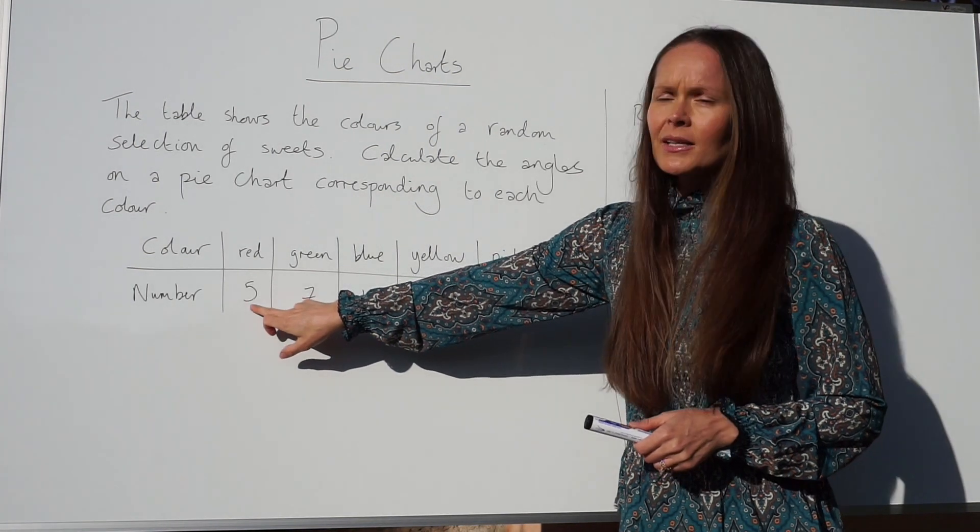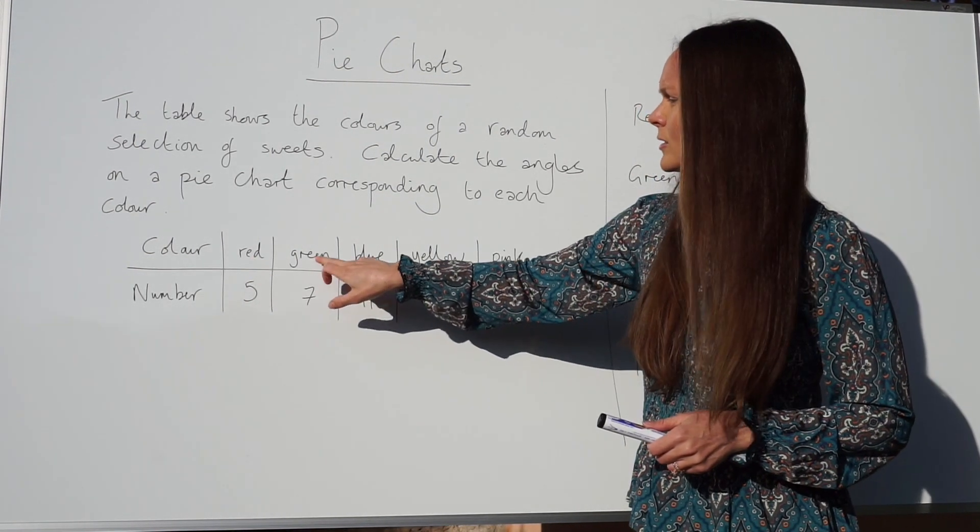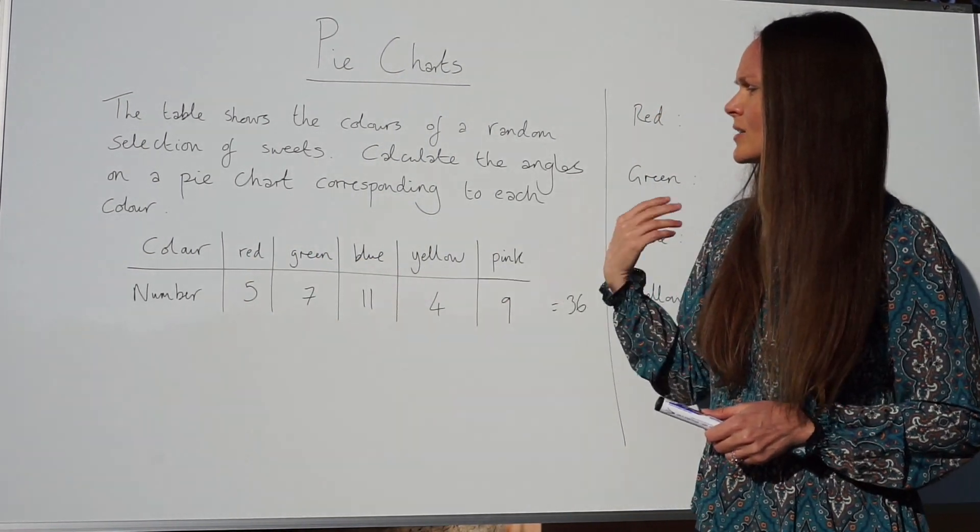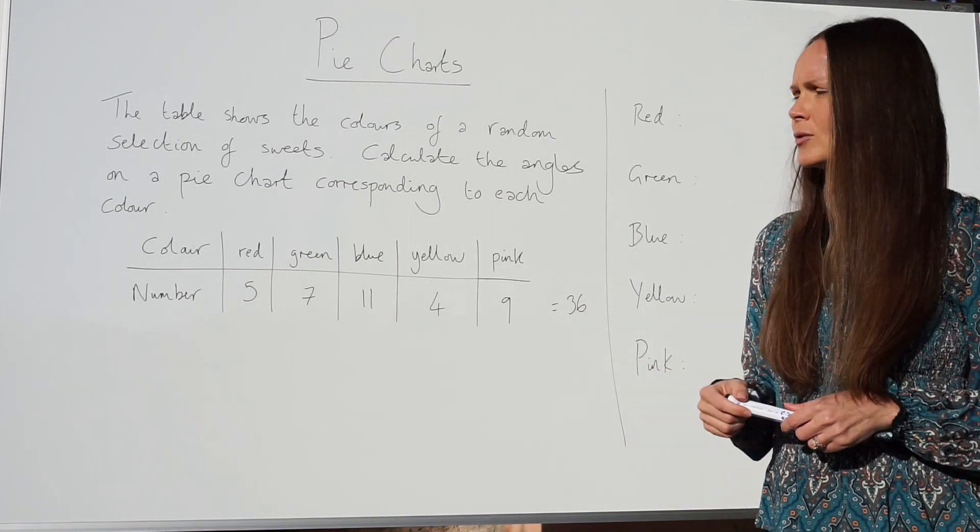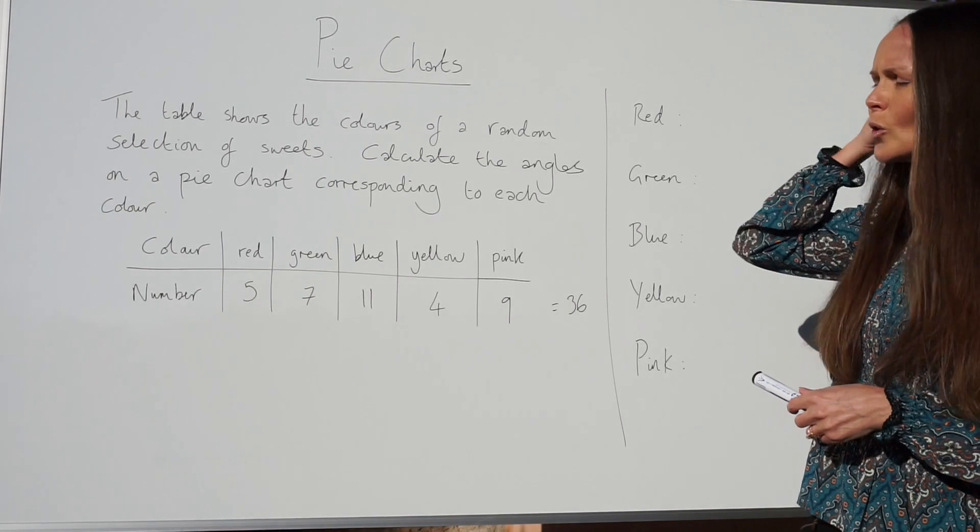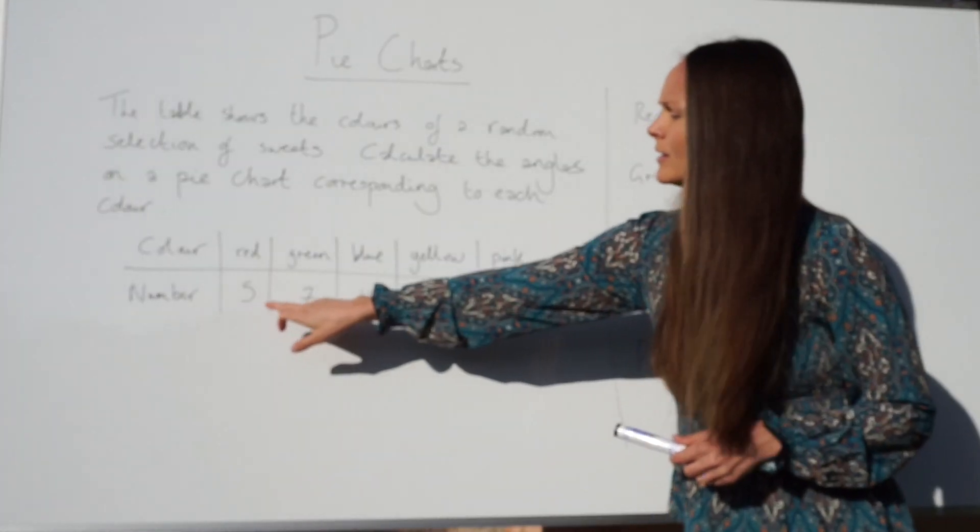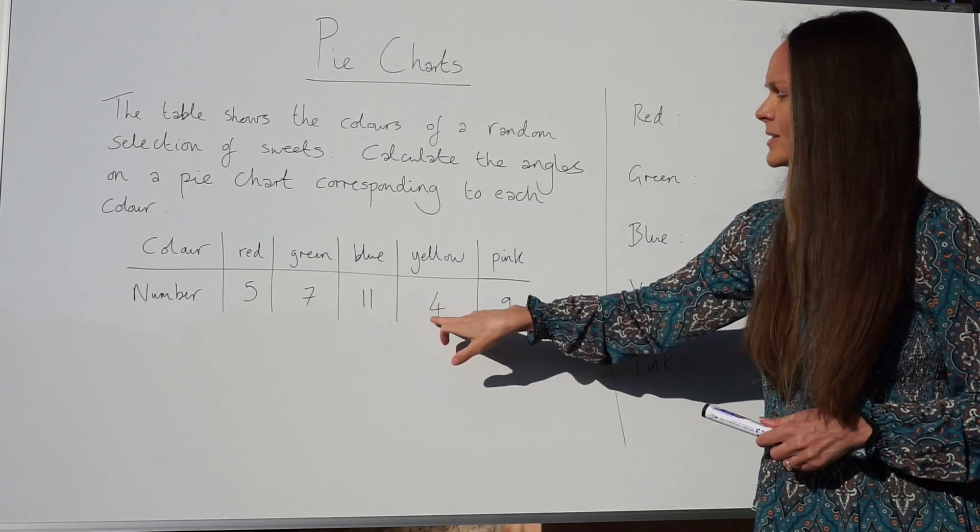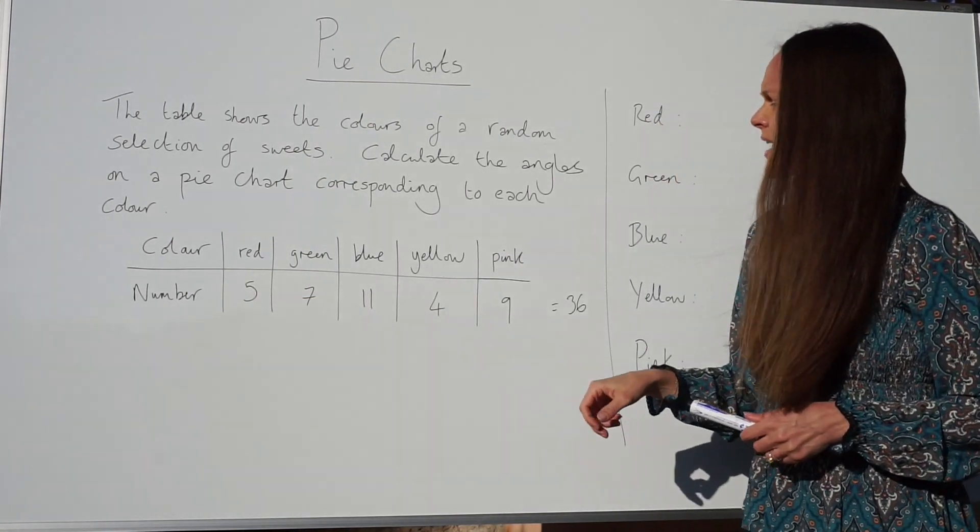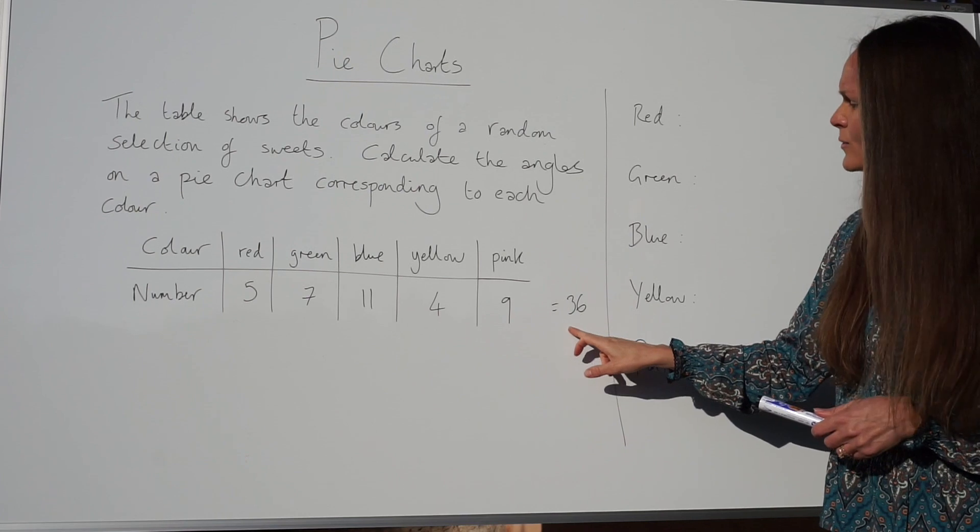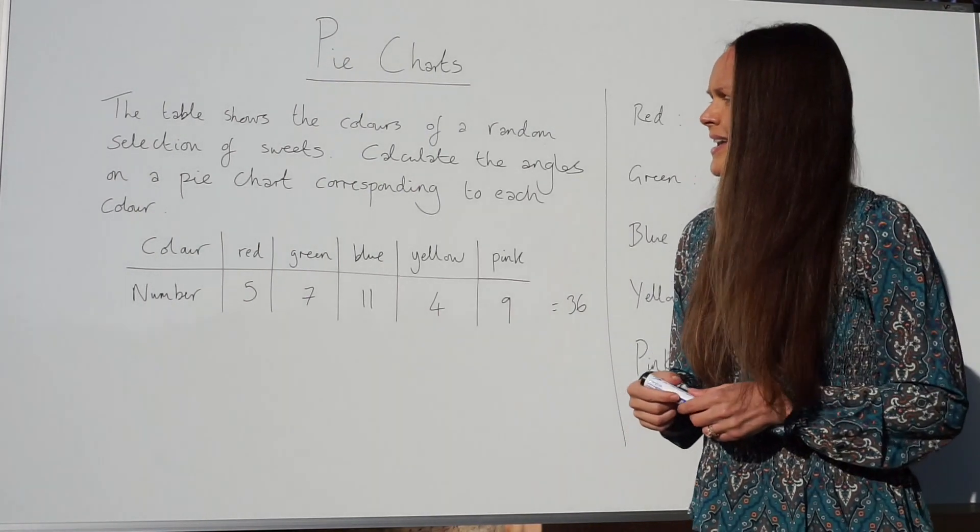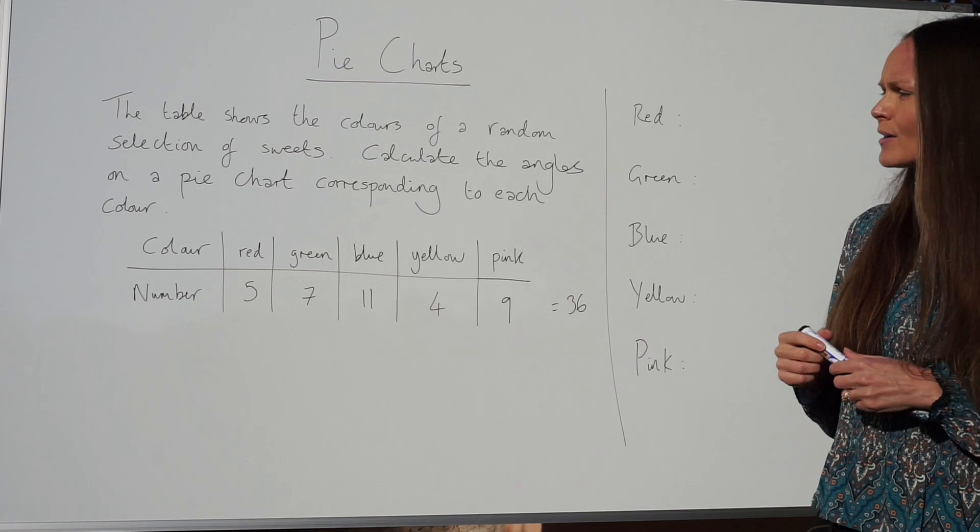It says that we have five red sweets, seven green sweets, eleven blue sweets, and so on. It doesn't tell you in the question how many sweets there are altogether, so what you need to do is add together all these numbers here, the frequencies. The numbers of each color should equal 36, so there's a total of 36 sweets altogether.